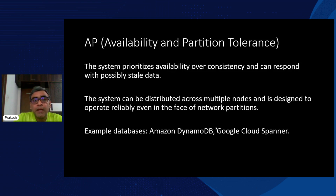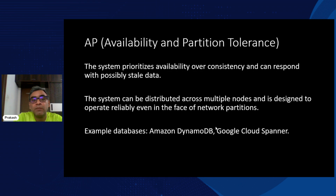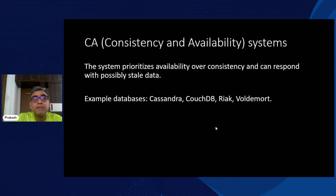Regarding partition tolerance in AP systems — we're talking about the reliability of distributed systems across nodes, where the system is designed to be network-partition tolerant. In case of any network failure, you have backups or alternative systems designed so that responses are still possible and the system isn't totally down. You've taken care of replicas and other things needed for network partition tolerance. Examples include Google Cloud Spanner — these are typical AP systems.